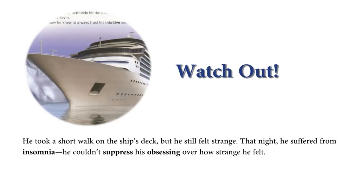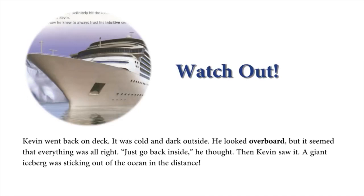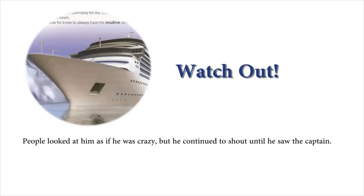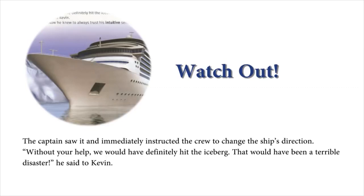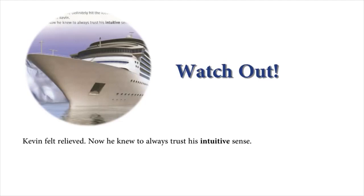Kevin went back on deck. It was cold and dark outside. He looked overboard, but it seemed that everything was all right. Just go back inside, he thought. Then Kevin saw it — a giant iceberg was sticking out of the ocean in the distance. 'Help!' he yelled. People looked at him as if he was crazy, but he continued to shout until he saw the captain. 'There's an iceberg out there,' Kevin said to him. 'If the ship doesn't move, we're liable to crash,' he said, pointing toward the iceberg. The captain saw it and immediately instructed the crew to change the ship's direction. 'Without your help, we would have definitely hit the iceberg. That would have been a terrible disaster,' he said to Kevin. Kevin felt relieved. Now he knew to always trust his intuitive sense.